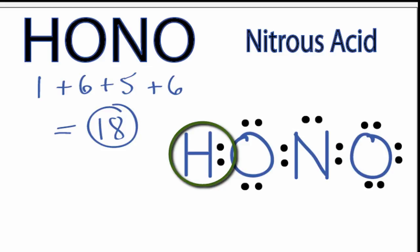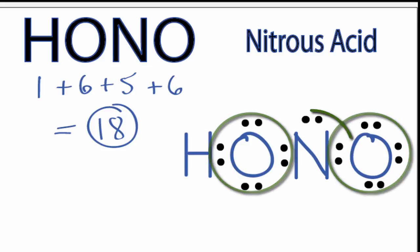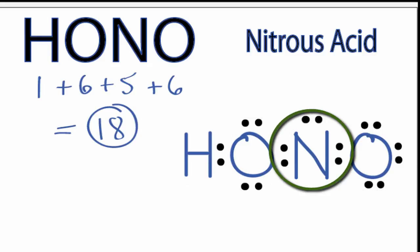Hydrogen has two valence electrons, its outer shell is full, and both oxygens have eight valence electrons. However, the nitrogen only has six.